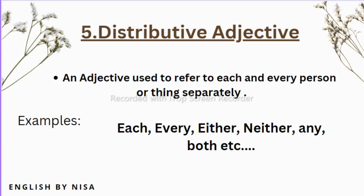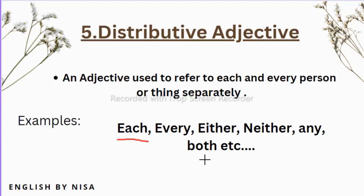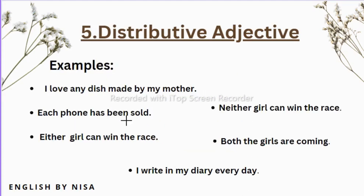Now let us see the fifth type — distributive adjective. We are all familiar with the word 'distribute,' which means to give something to someone. This adjective is used to refer to each and every person or thing separately. For example: each, every, either, neither, any, or both. Let's see some examples.